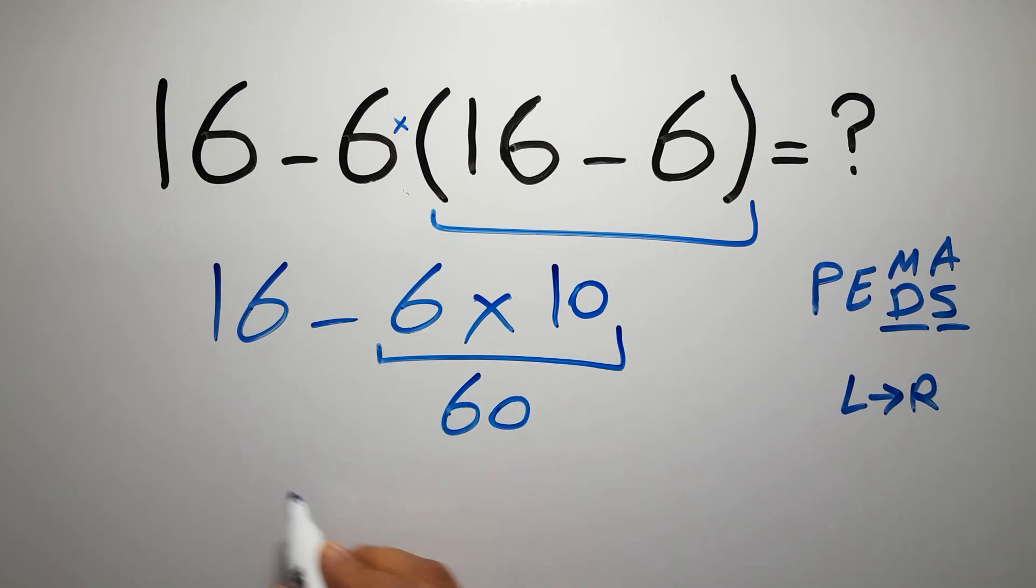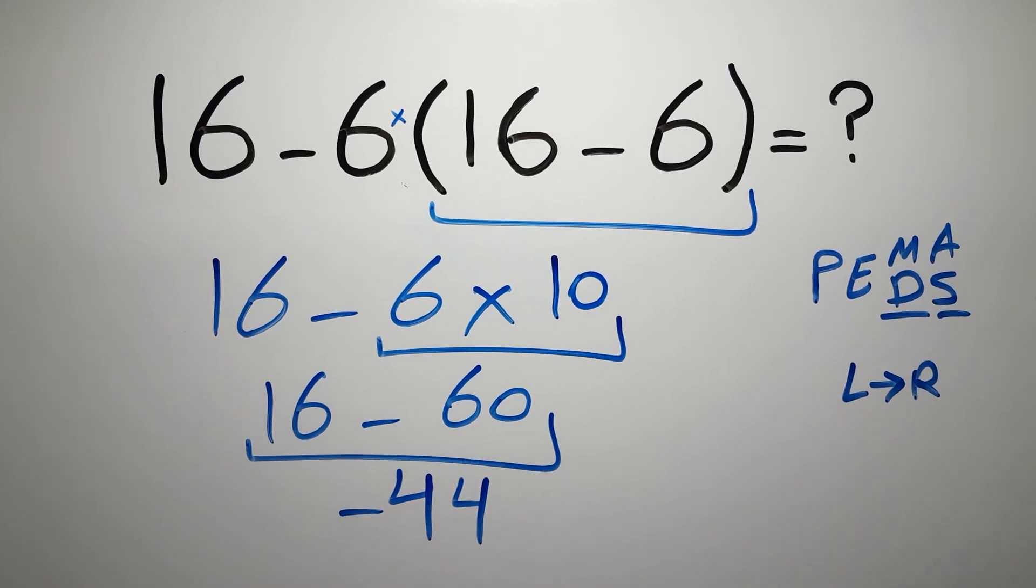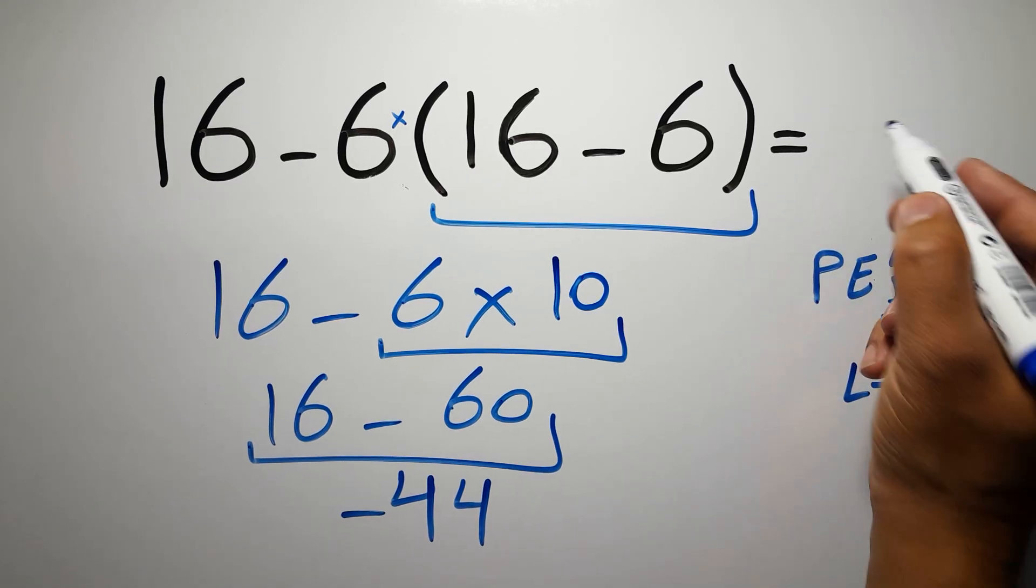So 16 minus 60 equals negative 44, and this is our final answer to this problem. The correct answer is negative 44.